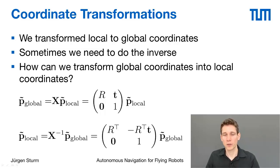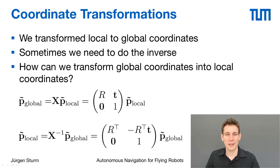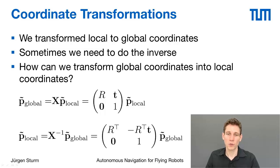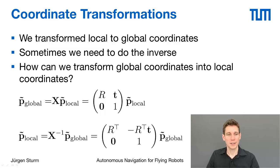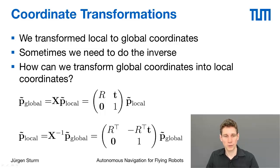Because the robot pose is a Euclidean transformation, we can specify the inverse directly. The rotation part, being an orthonormal matrix, can simply be transposed to obtain its inverse. Similarly, the new translation is computed by taking the transpose of the rotation times the original translation and flipping the sign. This gives us a very efficient way of transforming global coordinates to local coordinates.